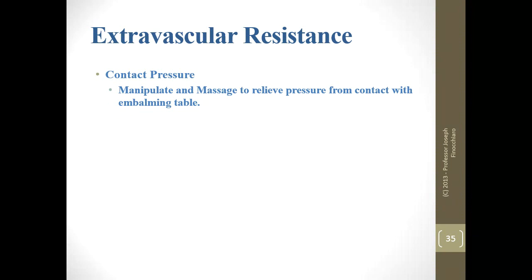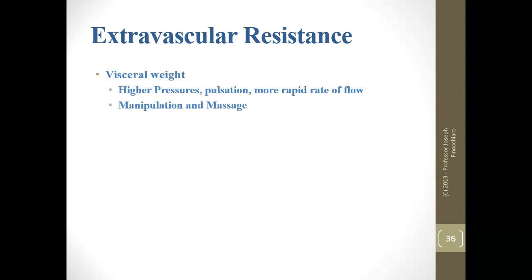Contact pressure — even just having the body on the table — can cause pressure, so use body bridges to relieve some of it. For visceral weight there is really not much you can do, so try to overcome it with higher pressure, pulsation, or increased rate of flow — in that order of preference. Pulsation first, then add pressure, and last resort add rate of flow, since rate of flow will generally increase abdominal swelling, whereas pressure alone will not.